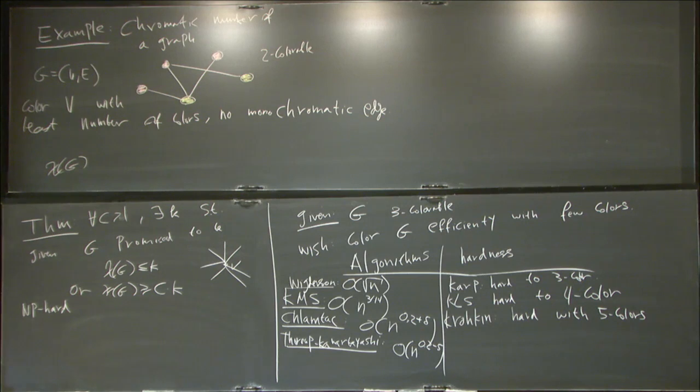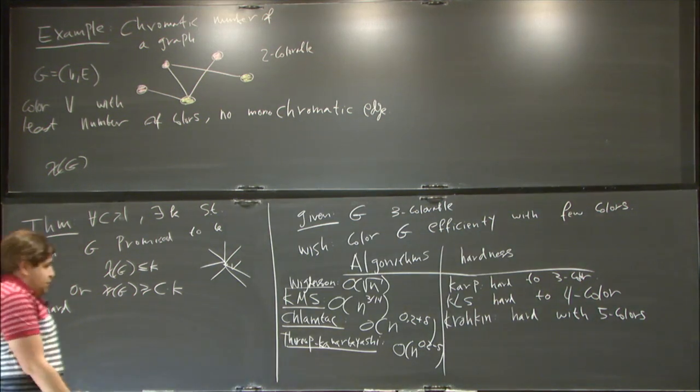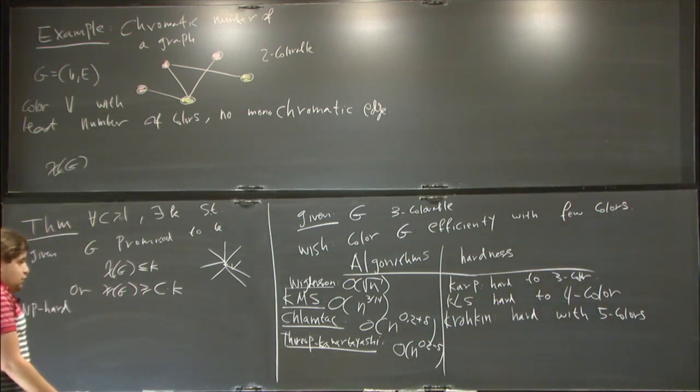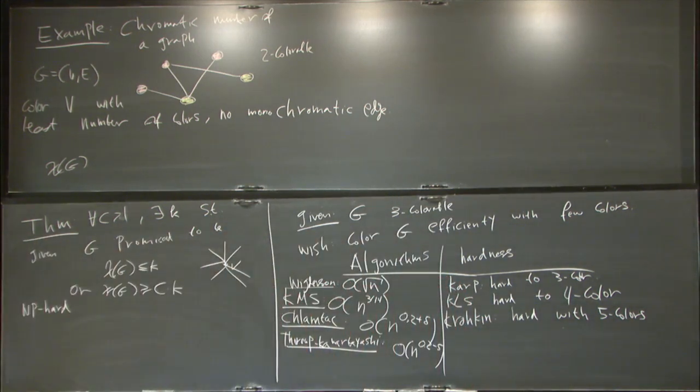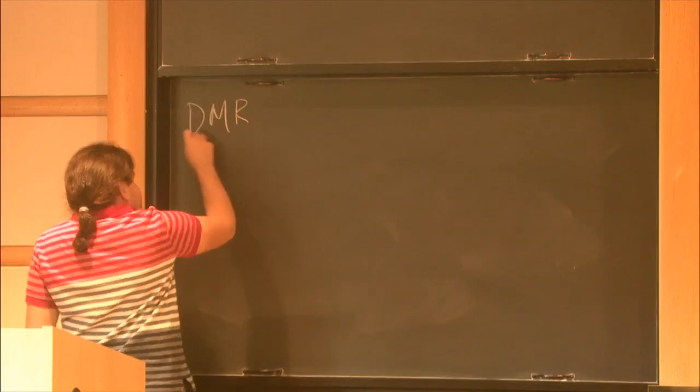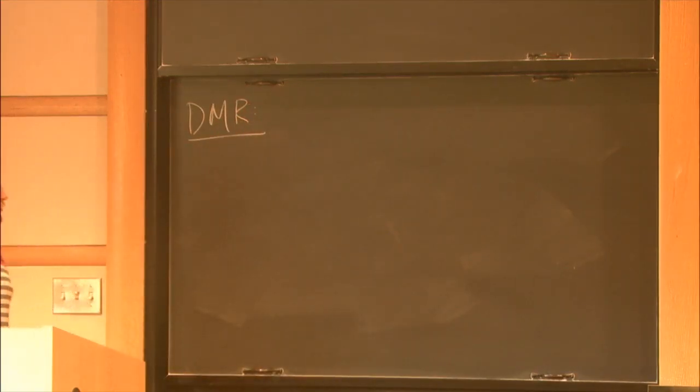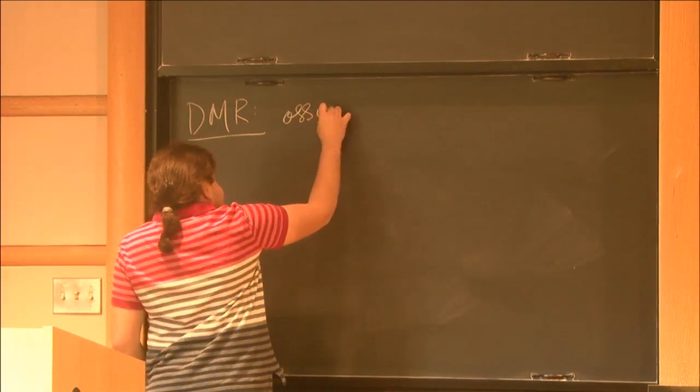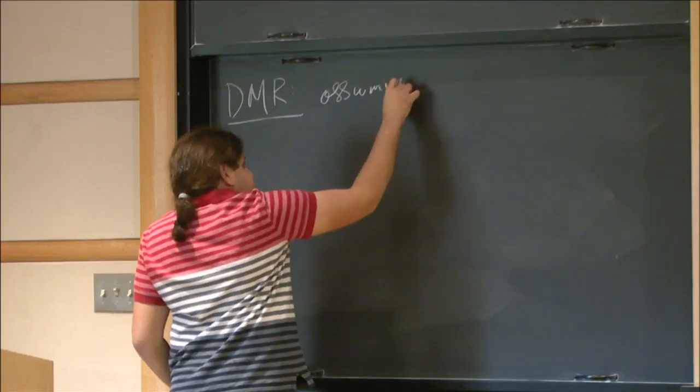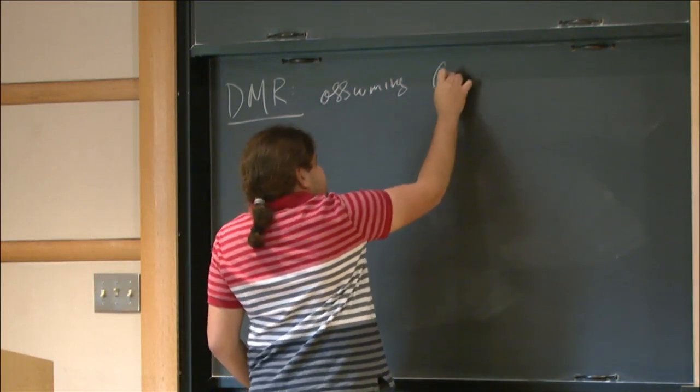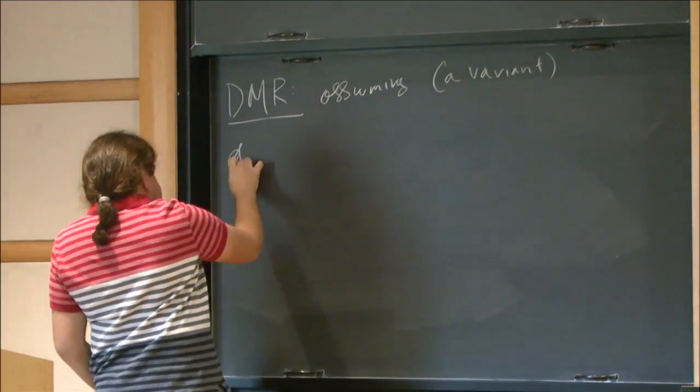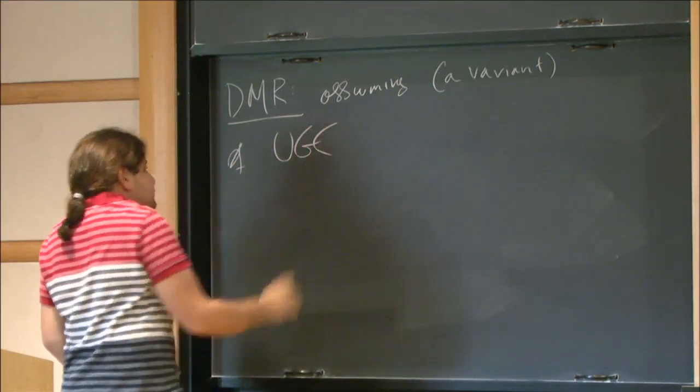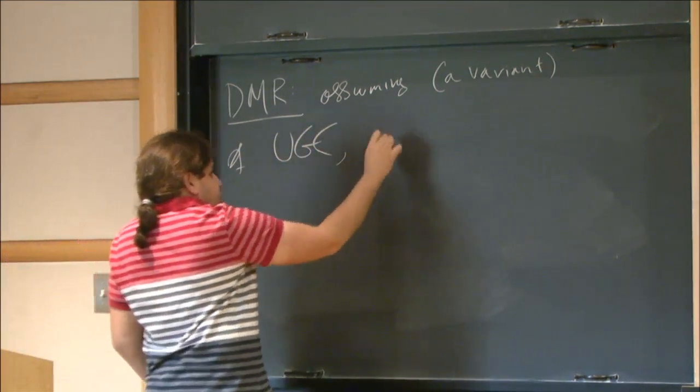So if one is willing to assume stronger assumptions better than P not equal to NP, you can get something much better than a five. So the Dinur, Mossel, and Regev, they proved the following theorem, assuming strictly speaking, a variant of UGC NP-hard